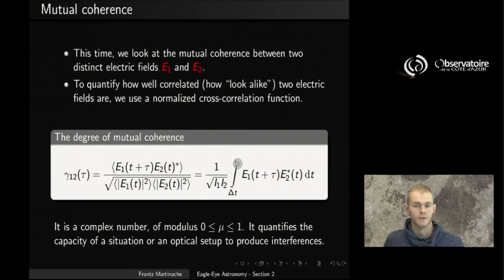And the way we write this time averaging is by integrating over time the cross-product between the two fields. Just like before, it's a complex number, characterized by a modulus whose magnitude is going to be between zero and one. And how close to one that modulus is quantifies the capacity of a situation or an optical setup to produce the phenomenon of interferences.